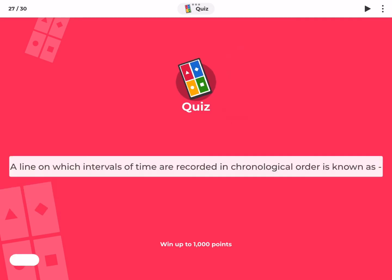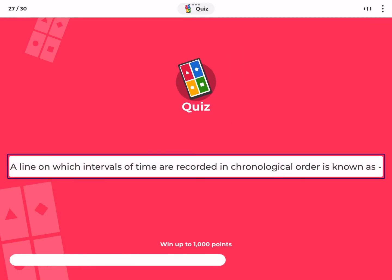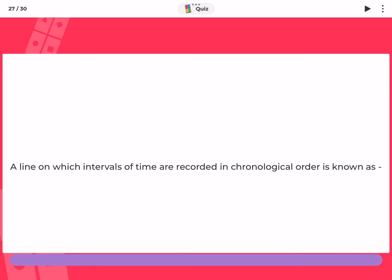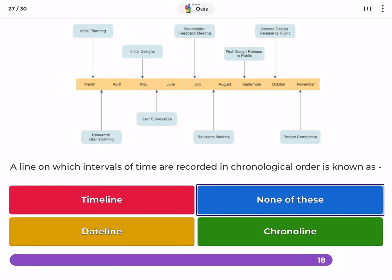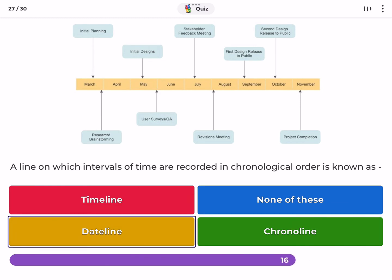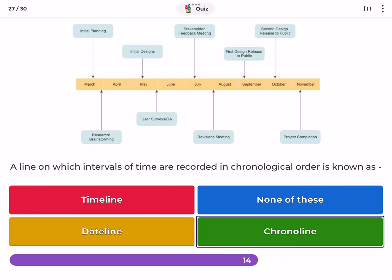A line on which intervals of time are recorded in chronological order is known as: timeline, none of these, dateline, chronoline.